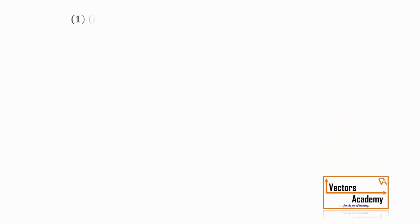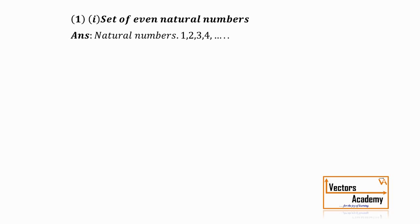Now let us look at a few statements to understand how sets are formed. The first statement is: set of even natural numbers. Natural numbers are 1, 2, 3 — they start from 1 and go to infinity. Out of these, which numbers are even? The numbers 2, 4, 6, 8 — all numbers divisible by 2 are even numbers. So the even natural numbers are 2, 4, 6, 8 and so on.